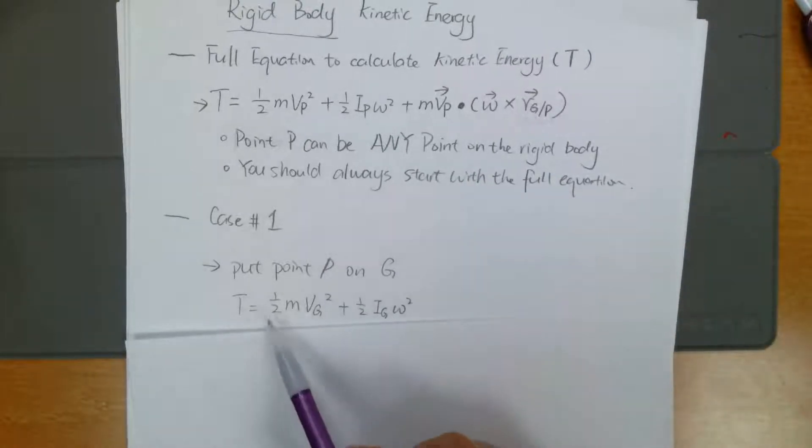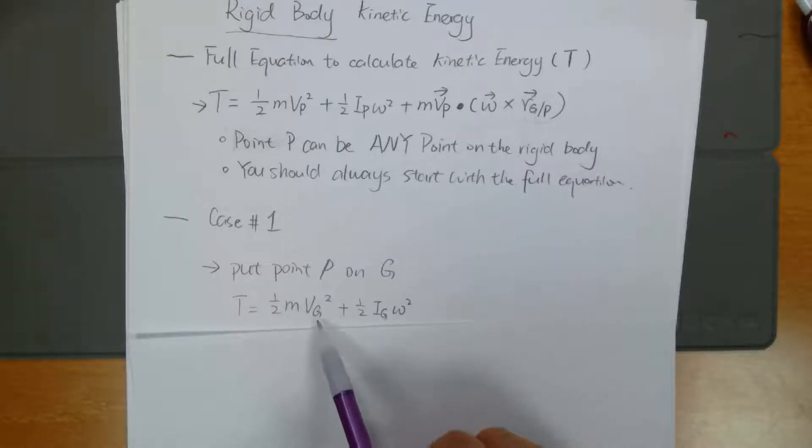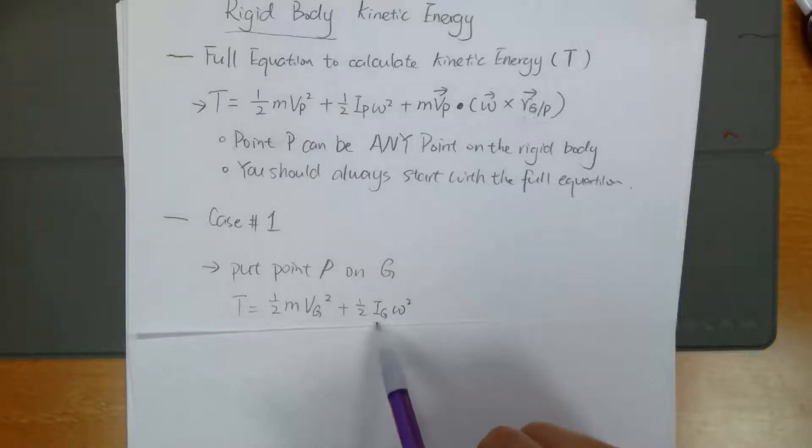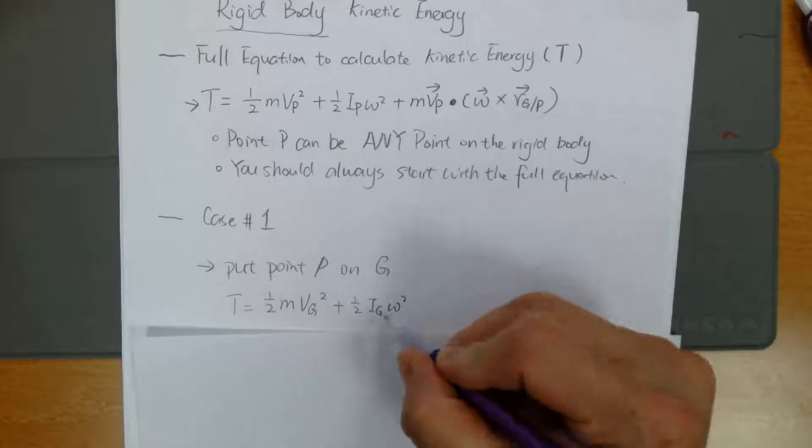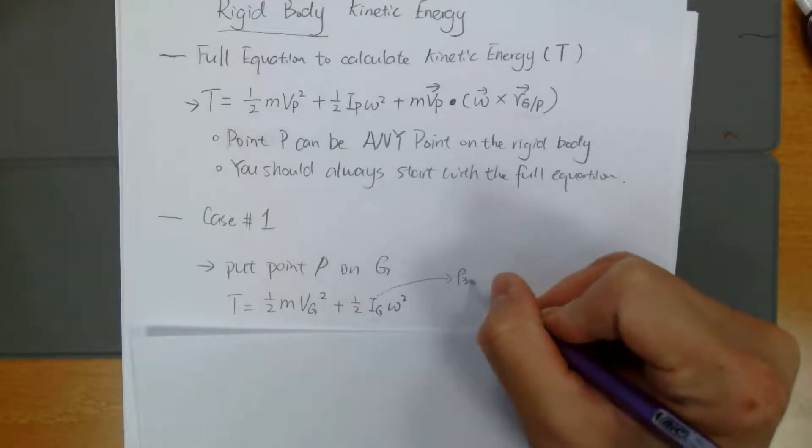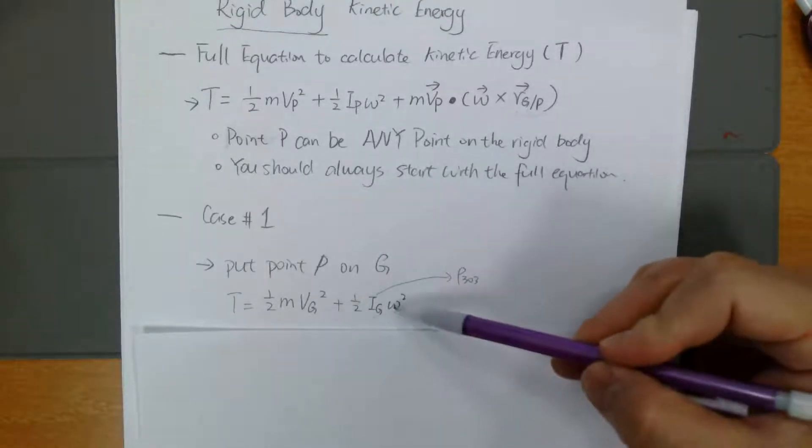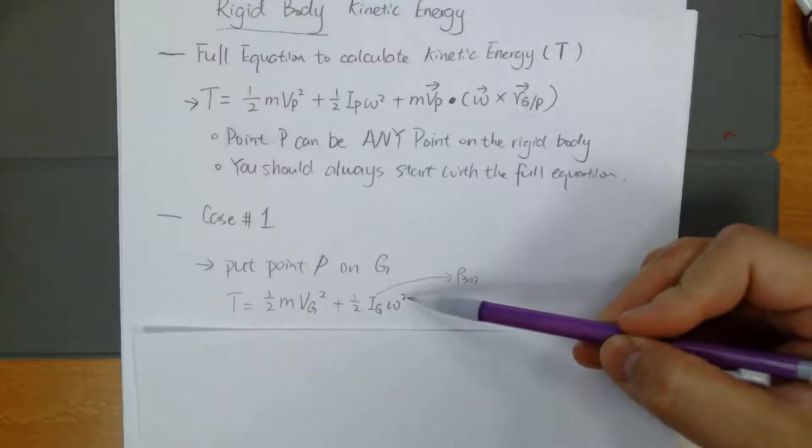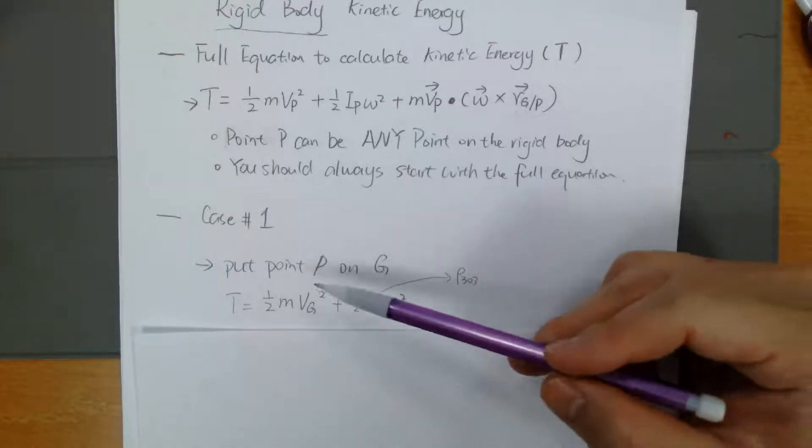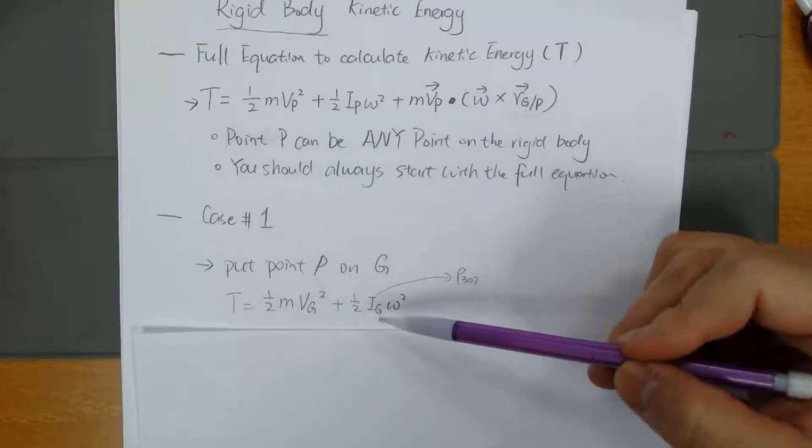So your kinetic energy calculation is going to just be one-half mvg squared, with speed at mass center squared, plus one-half Ig. This is simply the mass moment of inertia of the rigid body. On your page 303, there's a table with different geometries you can find what is Ig. And this omega squared is simply the angular speed of the rigid body squared. So that's the first case. You can pick P on the center of mass and simplify your kinetic energy calculation.